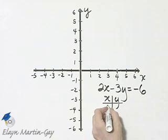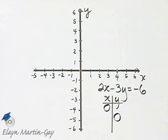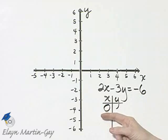So remember how do you find the y-intercept? You let x be zero. And how do you find the x-intercept? You let y be zero. Let's see if we can do these two ordered pair solutions mentally.